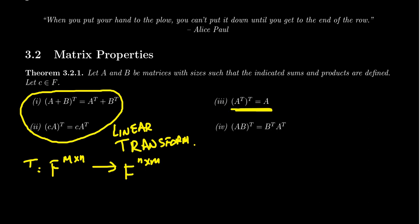Property three tells us that if you take the transpose of the transpose — the double transpose — you get back the original matrix A. So taking the transpose twice sends you back. This also tells us that the inverse of the transpose is itself; the transpose undoes itself. It's like taking the reciprocal of the reciprocal.